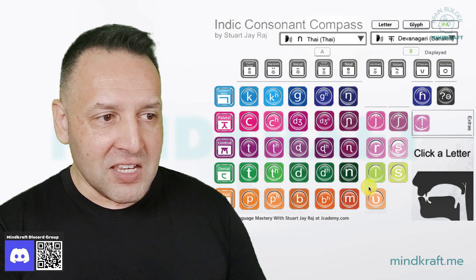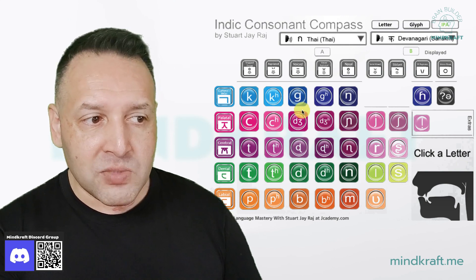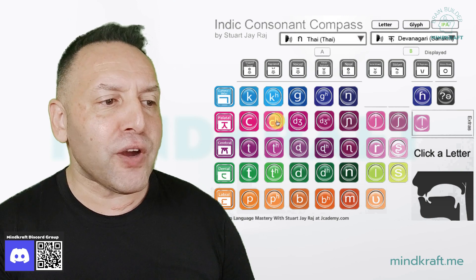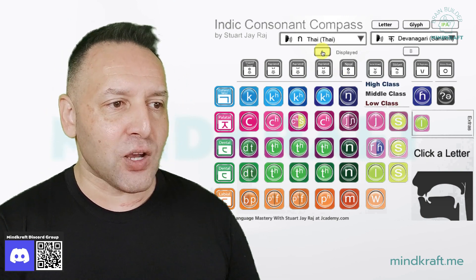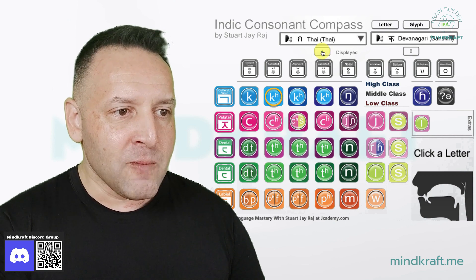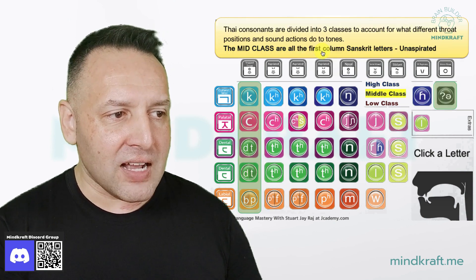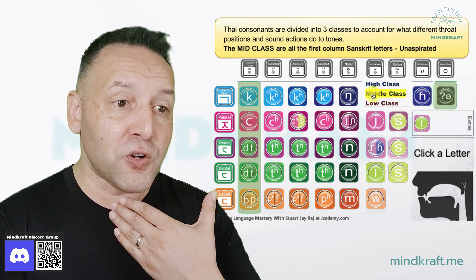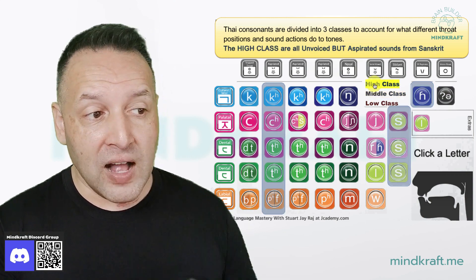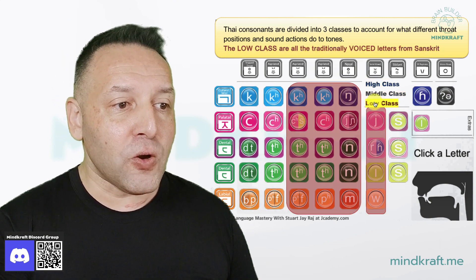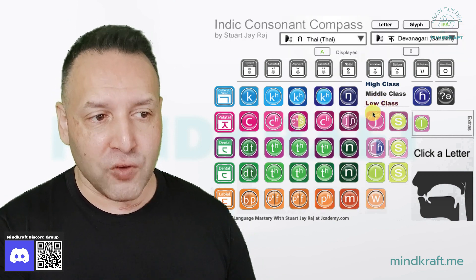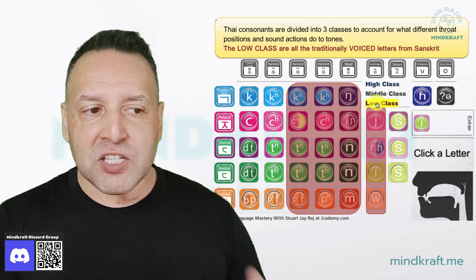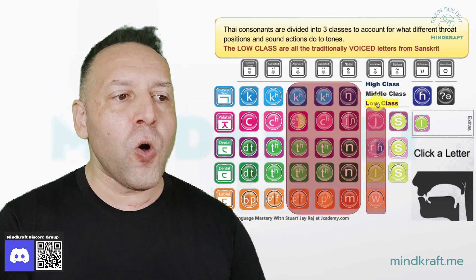The tone system follows the same logic: if sounds were in the voiced columns there would be one register, aspirated another, non-aspirated another. These are the same principles in Thai. We've got the middle class — the ones stopped in the throat — the aspirated ones which we call high class, and then the low class, which are all the traditionally voiced sounds that have now lost their voicing. This principle works across all languages, and all the so-called tone rules are just based on what happens in this map.